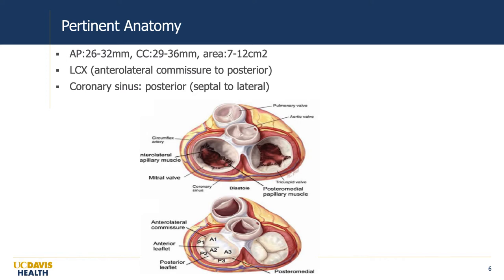One of the main challenges for transcatheter annuloplasty has been the significant variability in annular size and dimensions. You can see here the normal anterior-posterior and commissure-to-commissure dimensions and the variability in normal mitral valve area. Additionally, there are several important structures next to the mitral annulus which cannot be injured during transcatheter annuloplasty — most significantly the left circumflex, which is most intimate around the region of the left atrial appendage and anterior trigone.